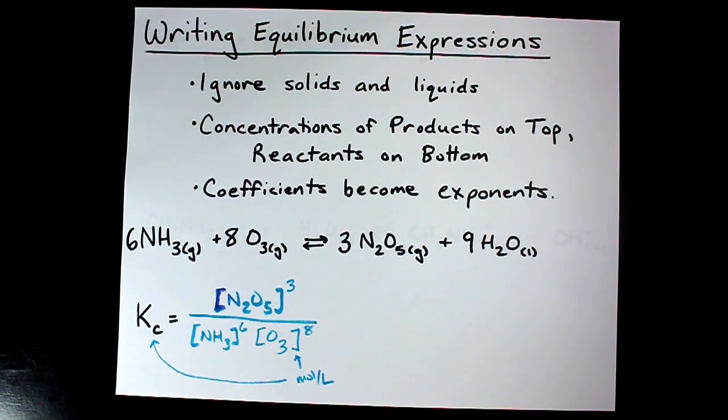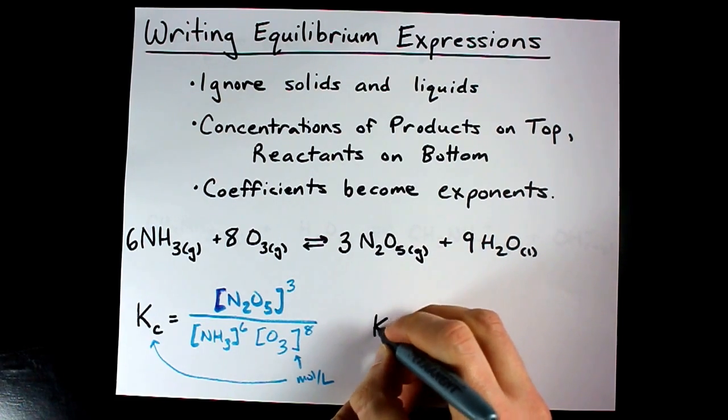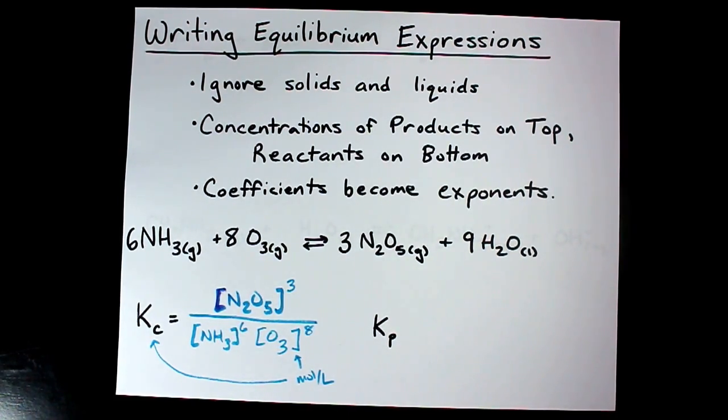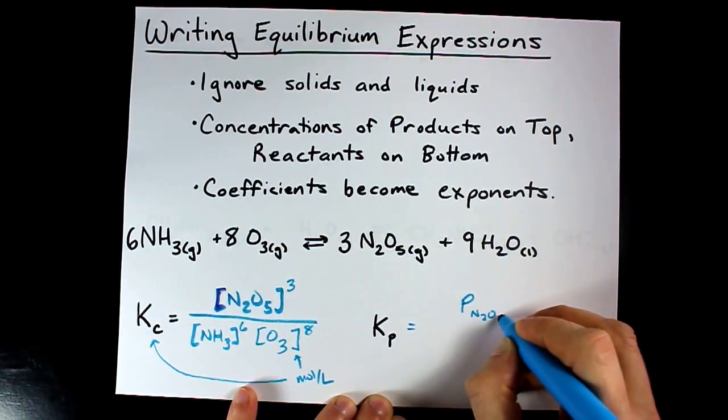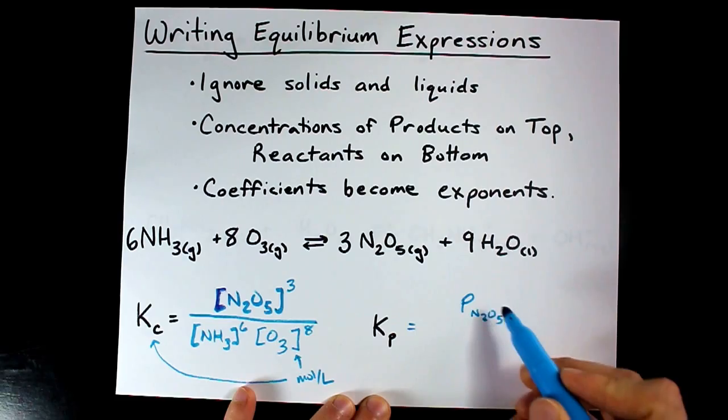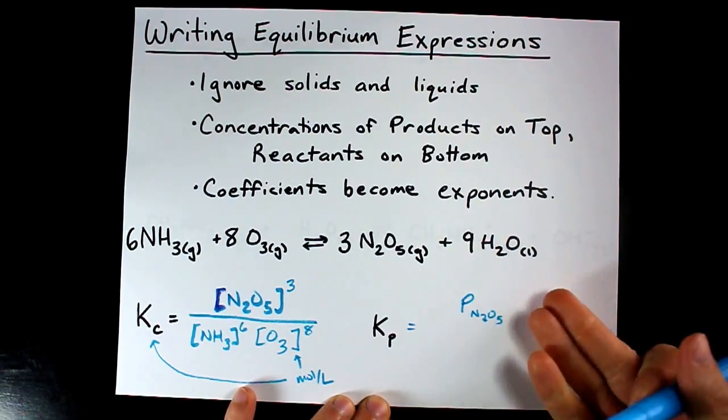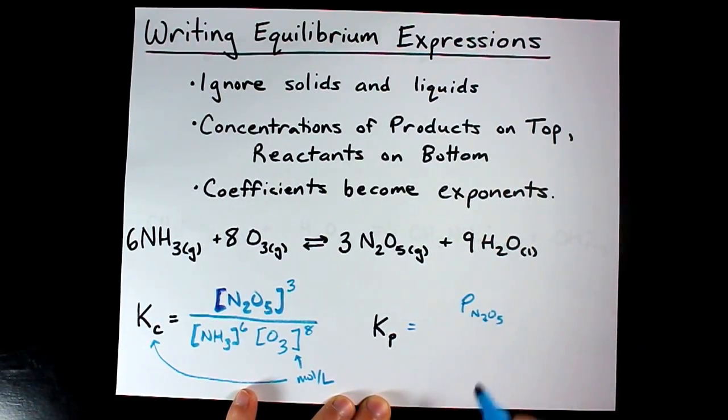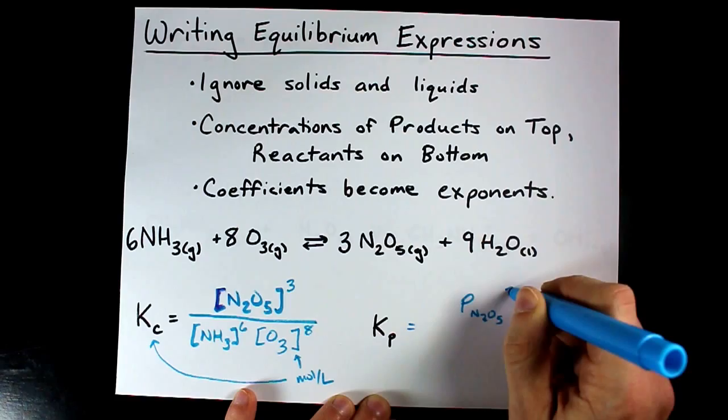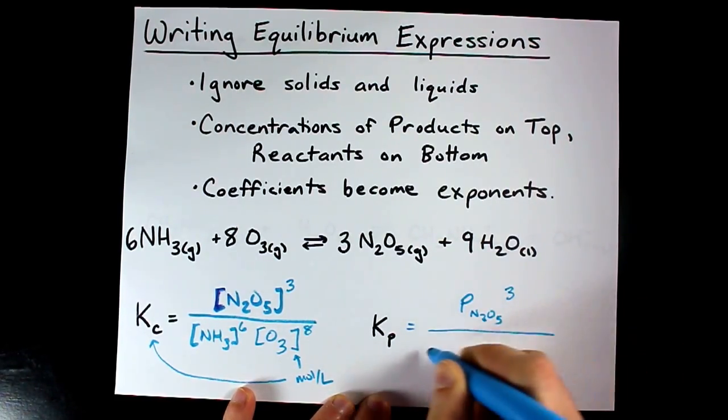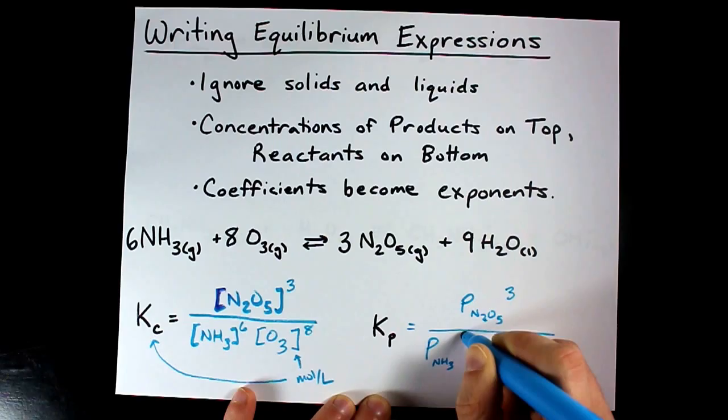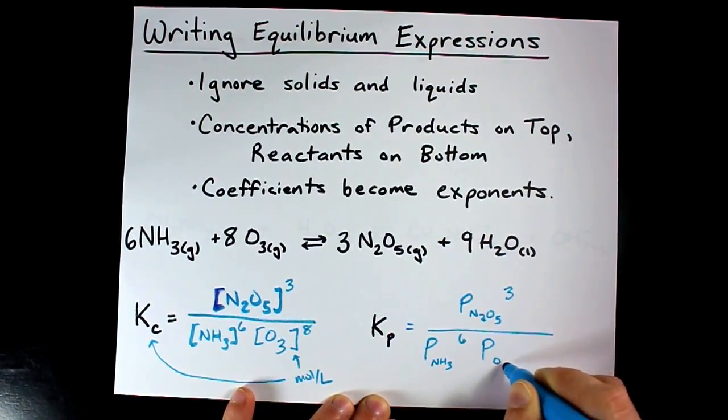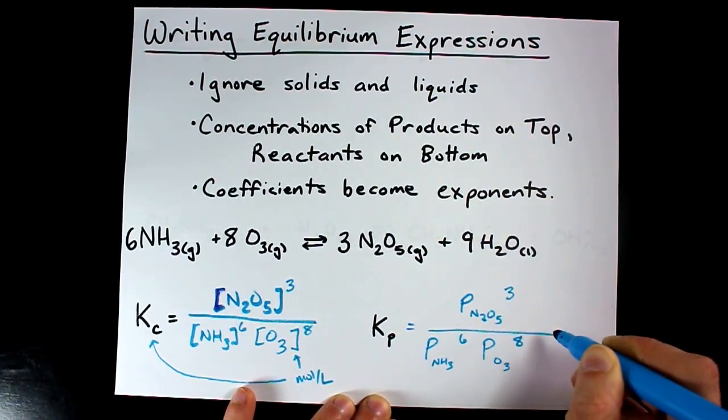Because these were all gases, I could have also created something called Kp. Kp is the exact same thing except you're going to use the partial pressure of each of those. What amount of pressure in your container or vessel comes from N2O5? Plug that number in to the power of three. What's the pressure contribution of ammonia in your vessel? To the power of six. What's the pressure contribution of ozone? To the power of eight.